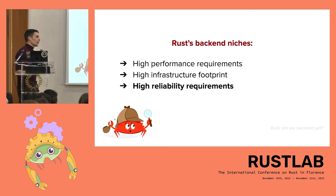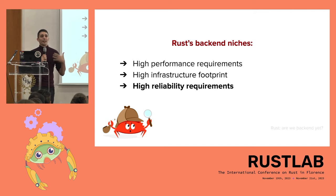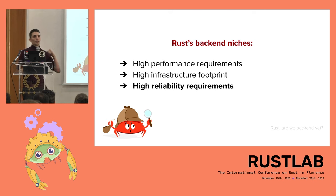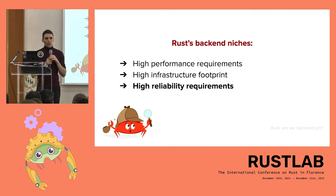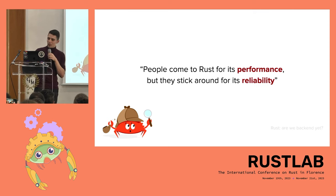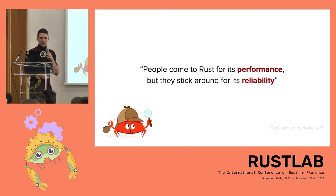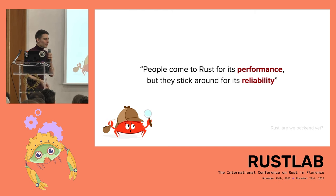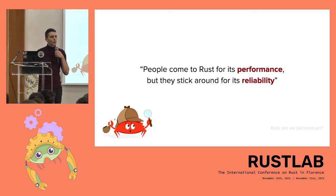Last but not least is high reliability requirements — software where the price of an error is very high. This may be security-related, or it may be just your business logic. I've personally built, architected, and deployed a Rust banking ledger, where sending money to the wrong people is something you don't want to do. There's a running quote in the Rust ecosystem: people come to Rust for performance, and then realize it's actually a great language for writing reliable software, and they stay around for that.